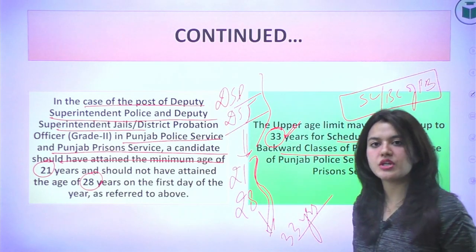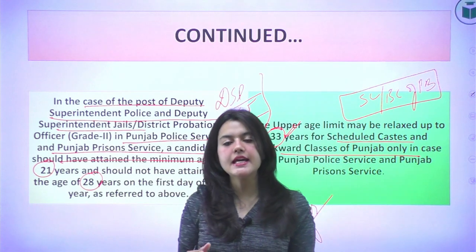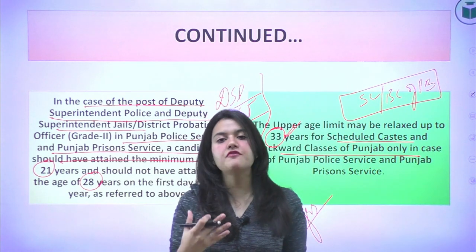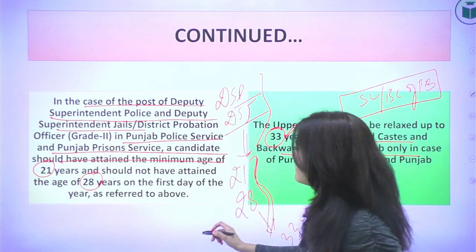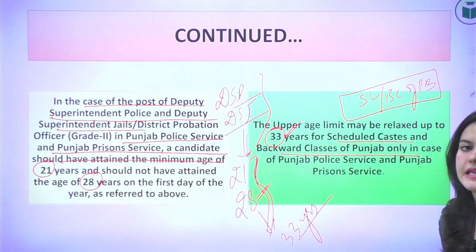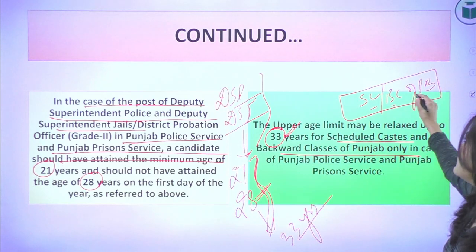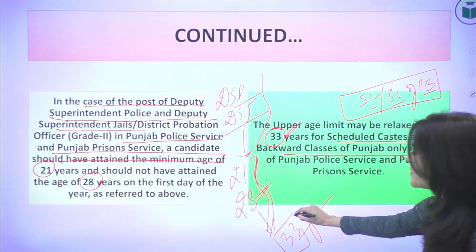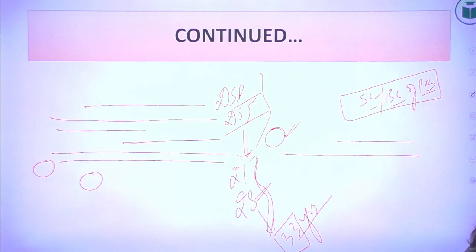To summarize the age limits: for general candidates, the upper limit is 37 years. If you are applying for DSP and DSJ, your upper age should be 28 years. If you belong to SC or BC of Punjab, relaxation is provided accordingly. This completes the age limit portion.